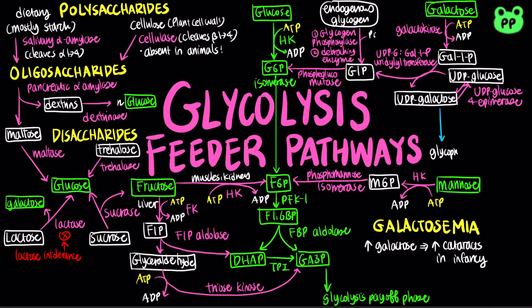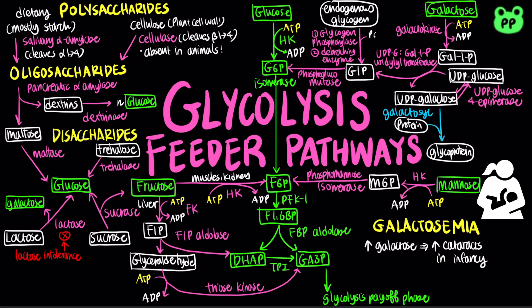UDP-galactose can combine with proteins to synthesize glycoprotein by the enzyme galactose-1-transferase. During lactation in mammals, the hormone prolactin synthesized by the anterior pituitary gland stimulates lactose synthase, which combines UDP-galactose and glucose into lactose. These two anabolic or biosynthetic pathways are labeled in blue.